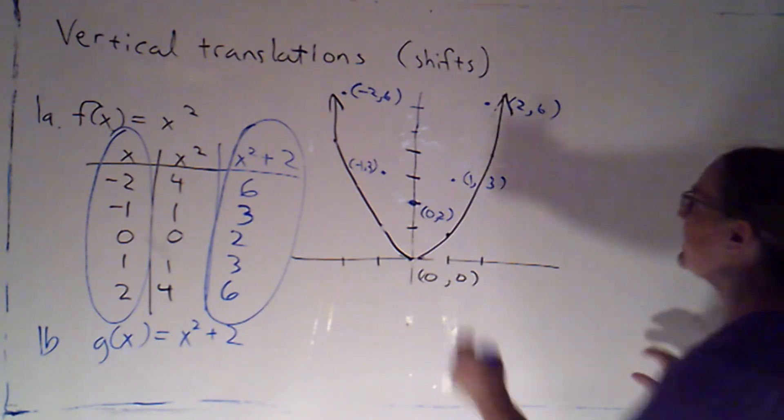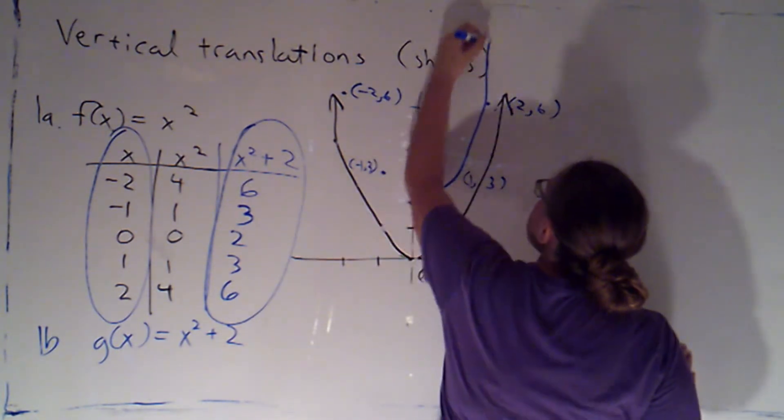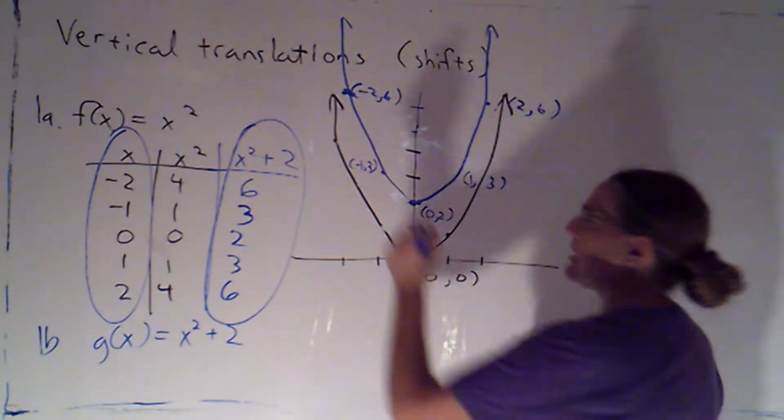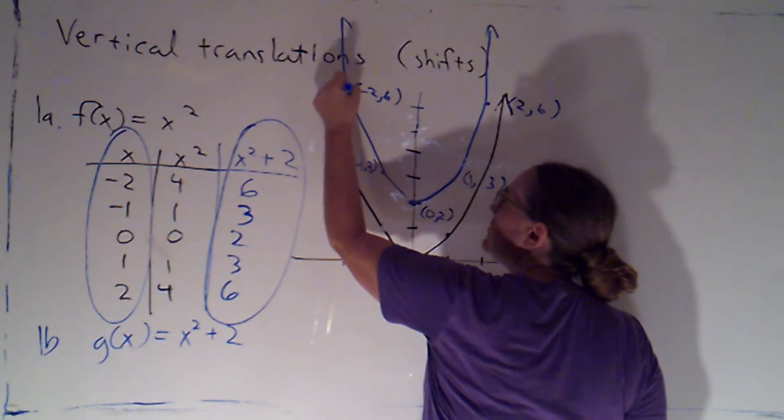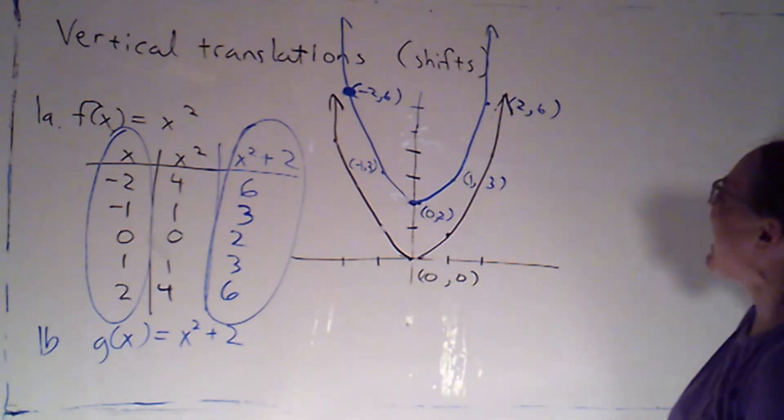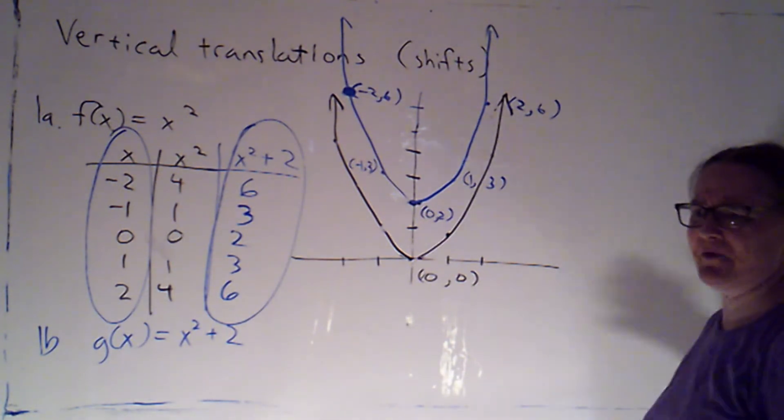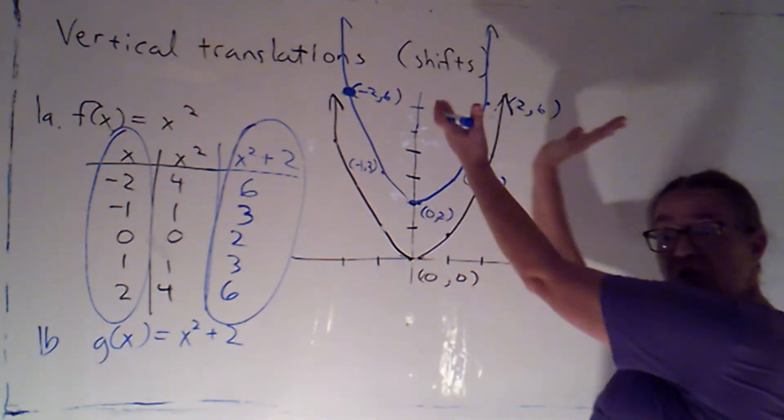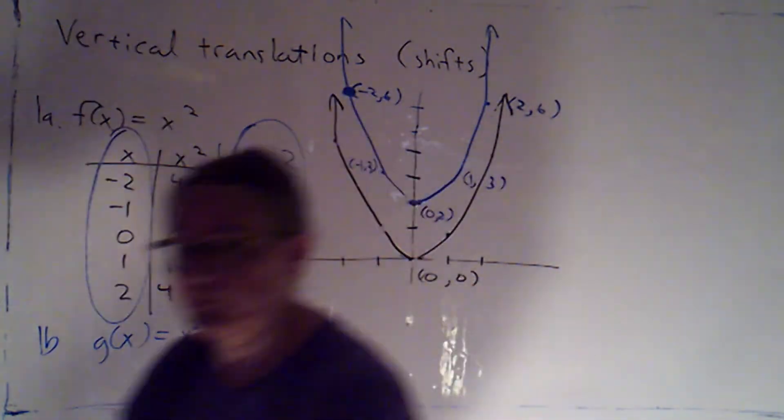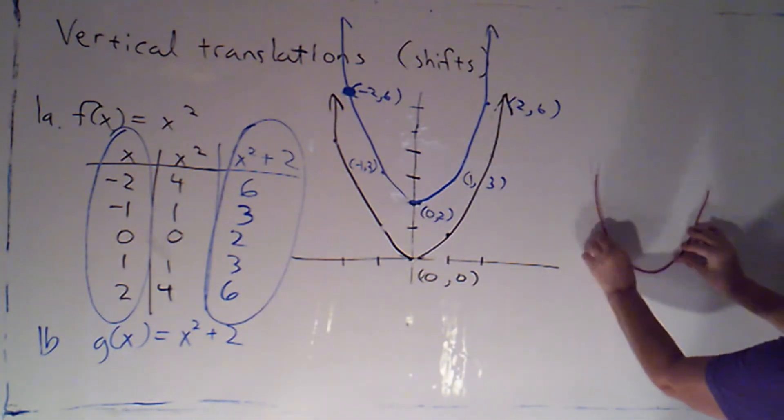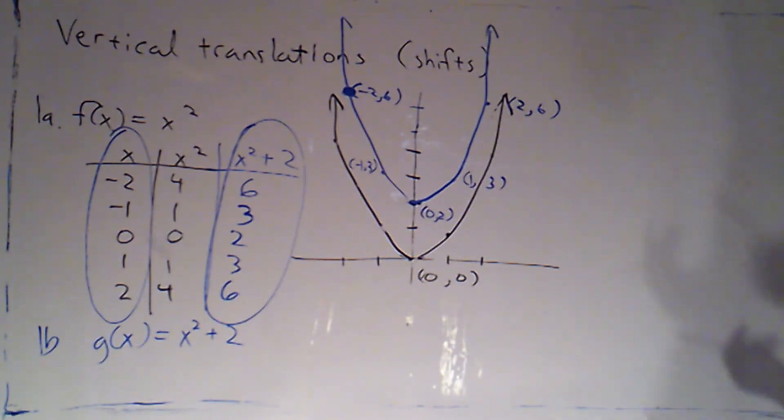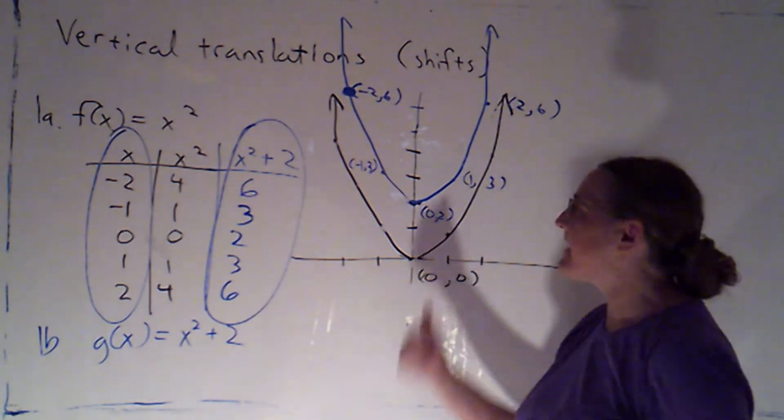If I connect those, I can see I've still got this same basic parabola shape. Very important graphing technique here: if you miss a point, make the point bigger, and then it doesn't look like you missed it. But essentially what we've done is by raising all of the y values the same amount, it's like I just took that entire shape and lifted it up two units. Every single point just got raised until it was two higher. So it preserves the shape of the graph and just puts it at a higher location.